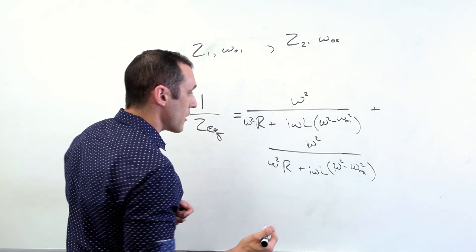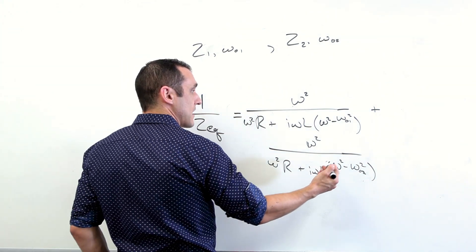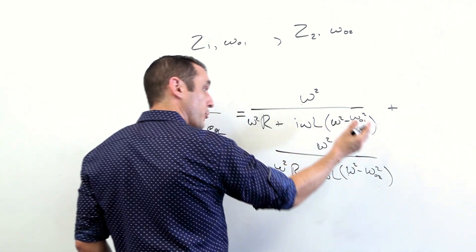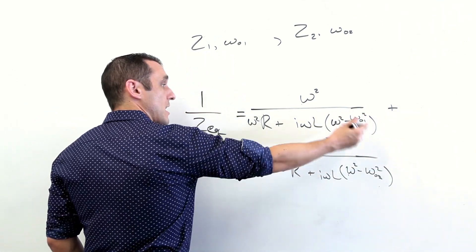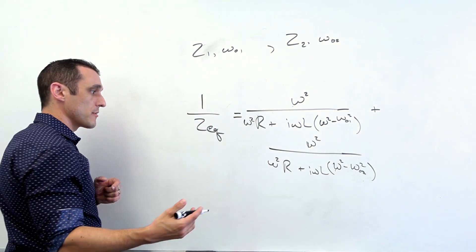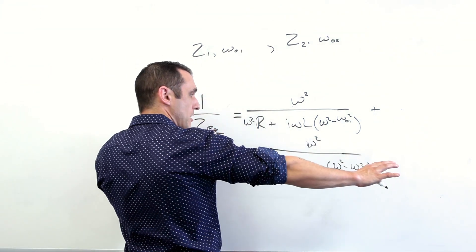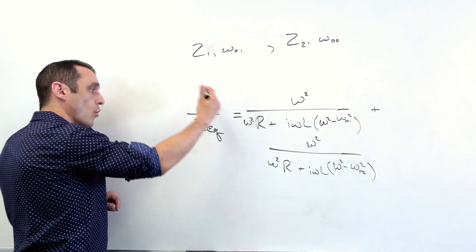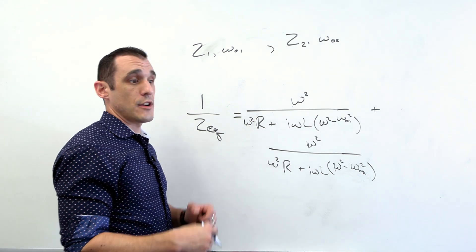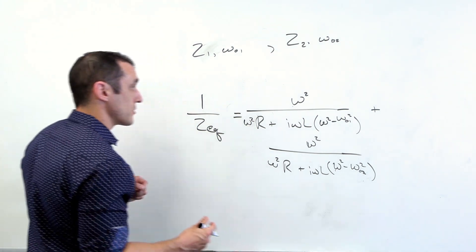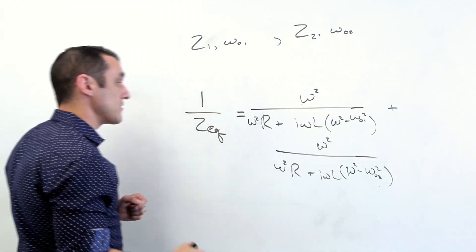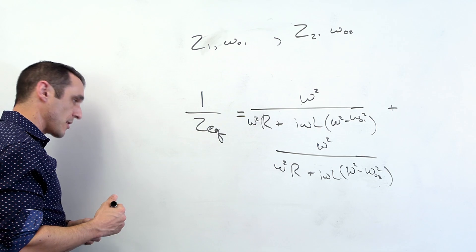We have a few key observations. First, if our angular frequency is exactly equal to one of our natural frequencies, we get a zero in the denominator of one of the admittance terms, which simplifies the equation considerably. If we're very far away from our natural frequencies, then one over the equivalent impedance becomes a very small number — and when inverted, that gives a very large impedance. That is what gives us the peaks in the PDN impedance spectrum.